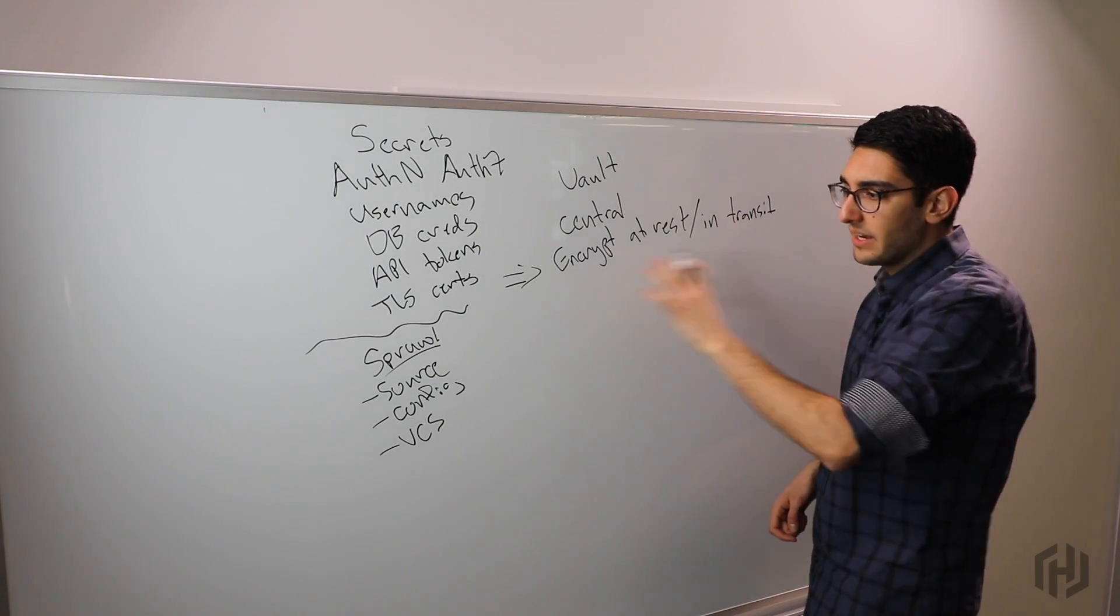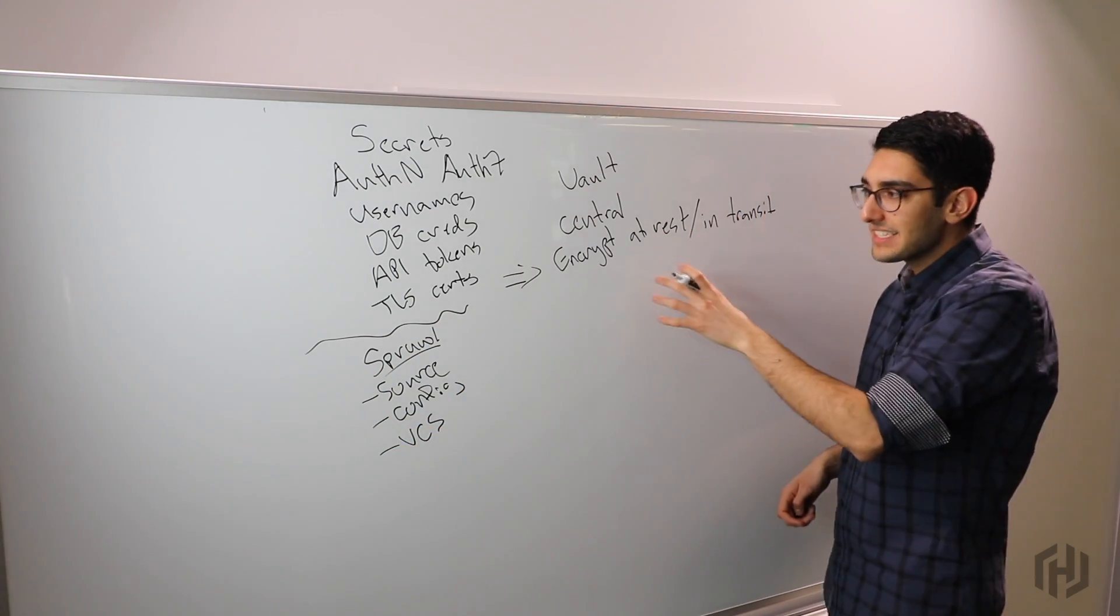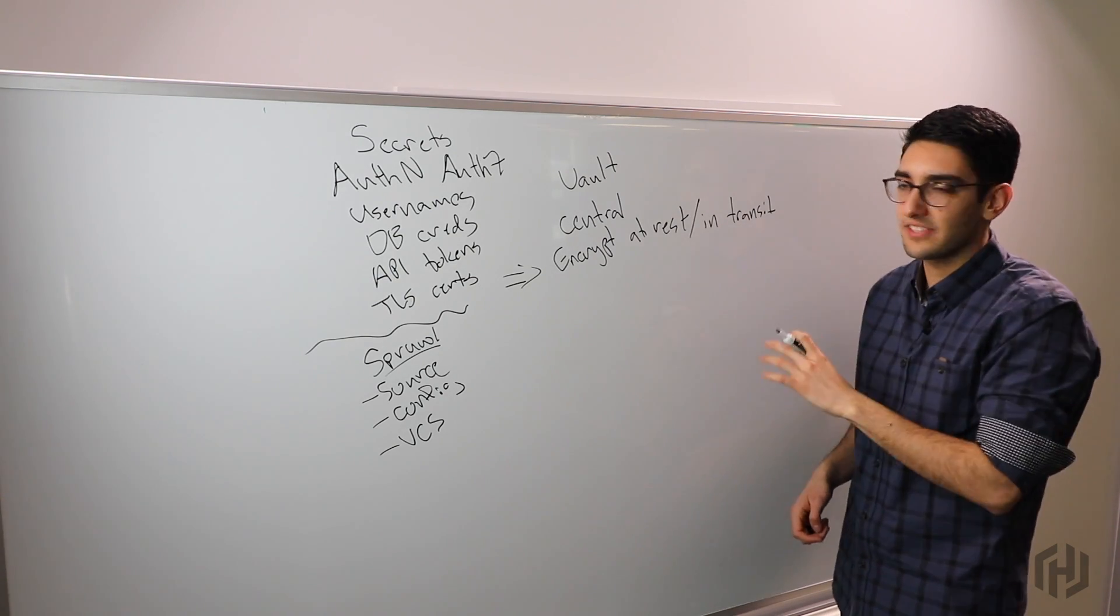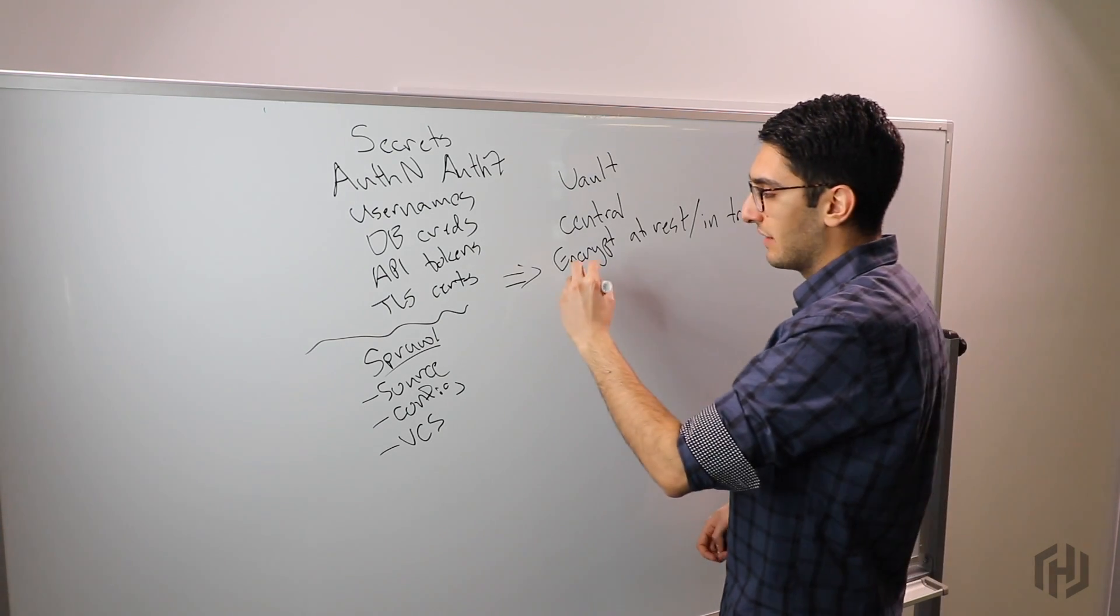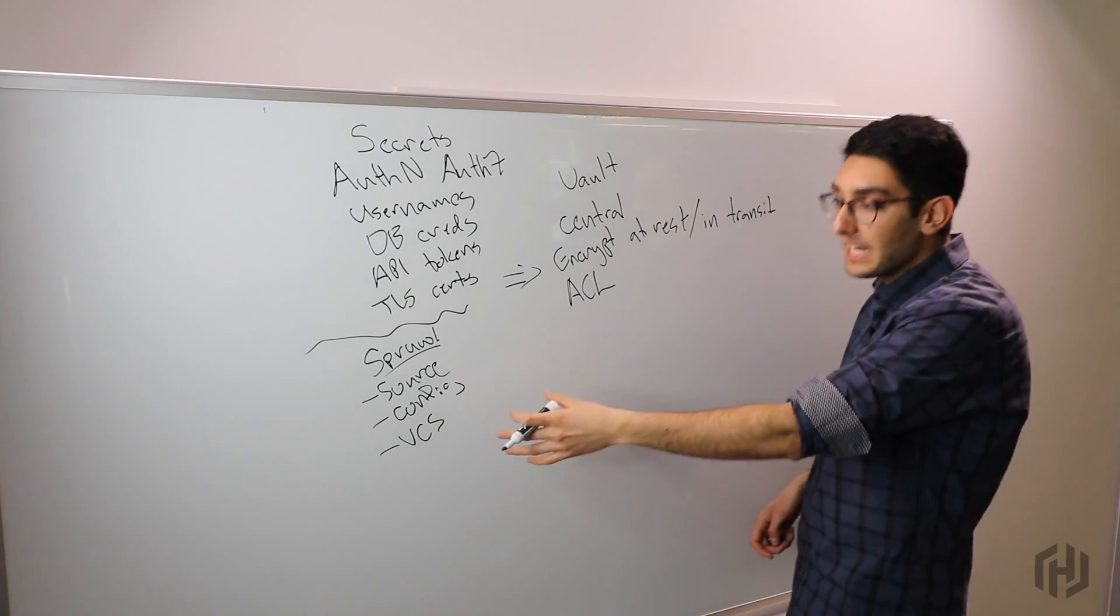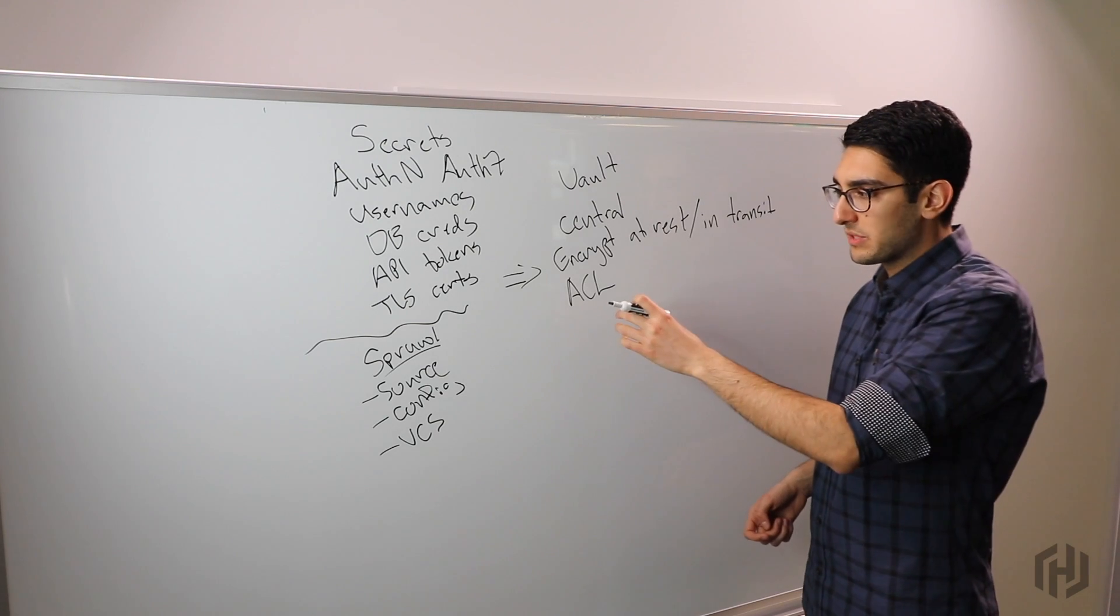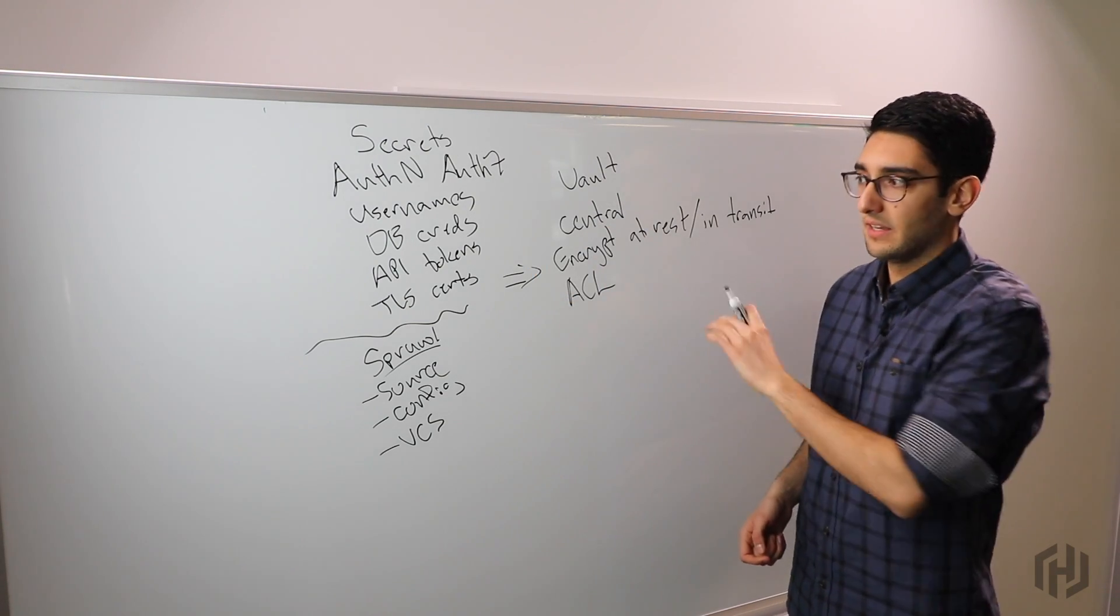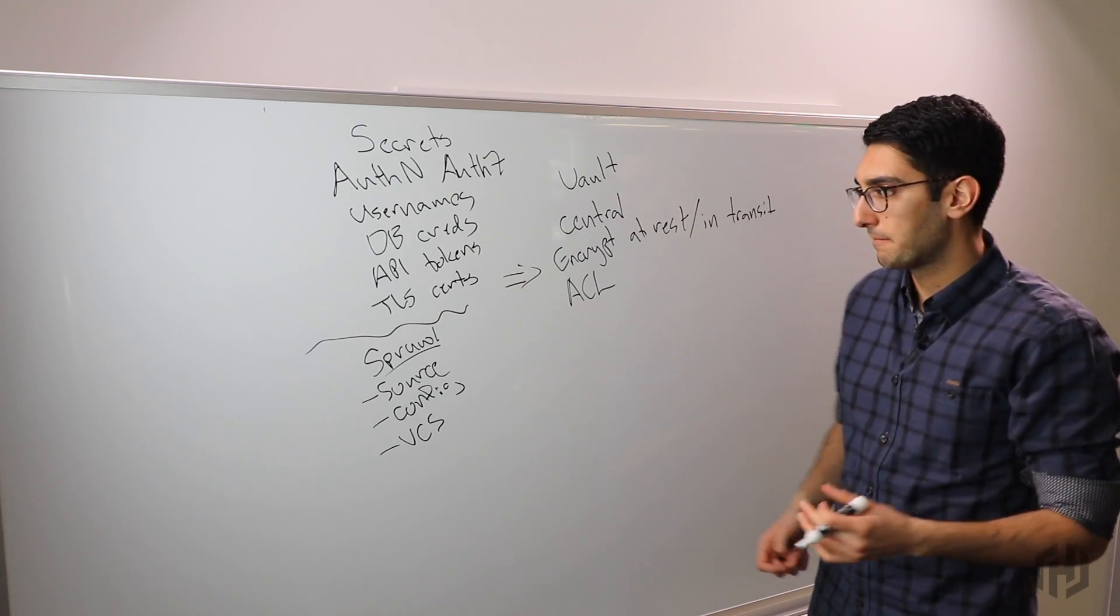This gives us a few properties. One, unlike systems where we were storing stuff in plaintext, at least now if you could see where the secret is stored at rest, it's encrypted. Next, Vault lets us overlay fine-grained access control on top of all this. Instead of being anyone in our organization who has access to GitHub, now we can say the web server needs access to the database credential, the API server needs the API tokens, but everyone shouldn't have access to everything.